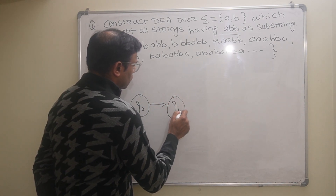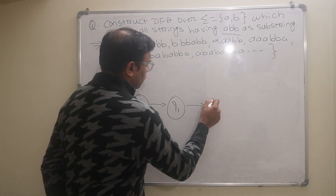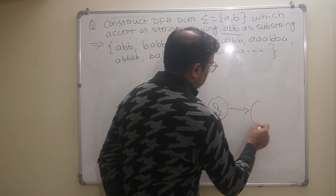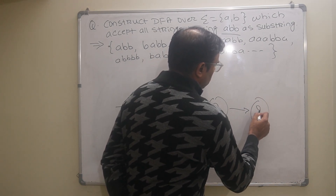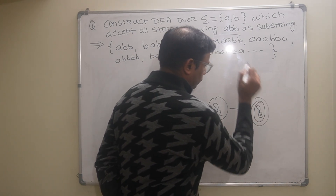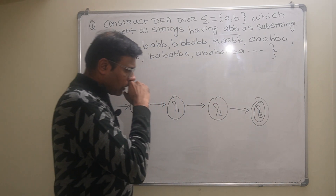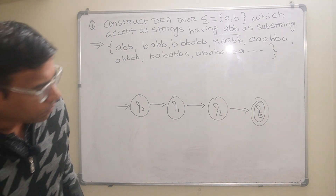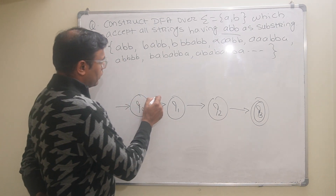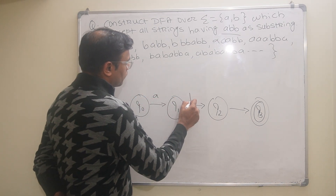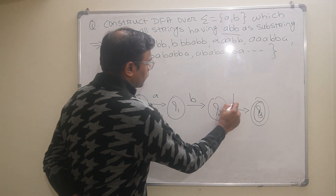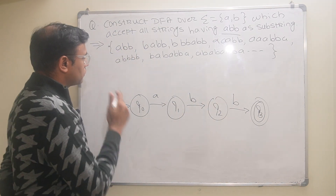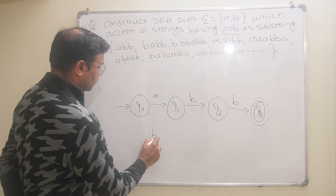The final state will be Q3. Now the first string is ABB — it is simple, it goes directly to the final state. Suppose the string contains BABB, BBABB, or BBBABB — in this case the string contains any number of B's at the beginning.